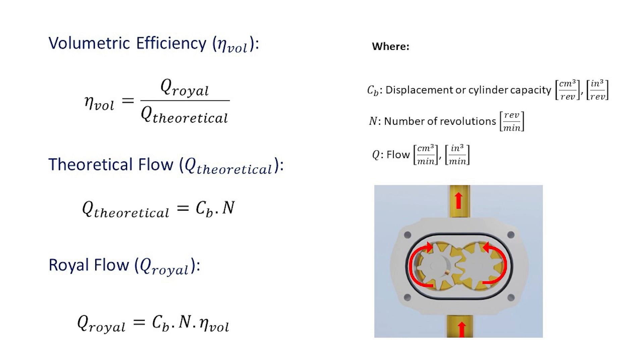It must be remembered that the displacement or cylinder capacity is the volume of fluid, which can be oil, displaced towards the outlet per revolution. We also know that one revolution is equal to the 360 degrees angular rotation of the gear shaft.